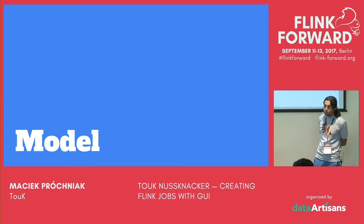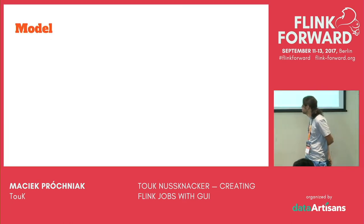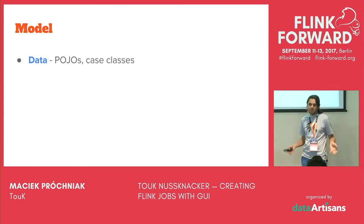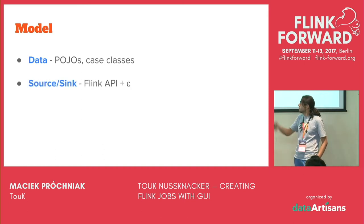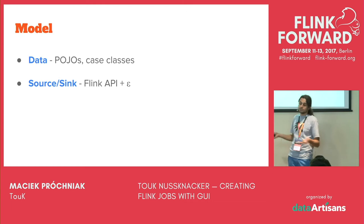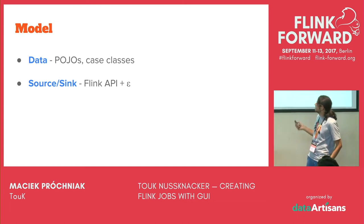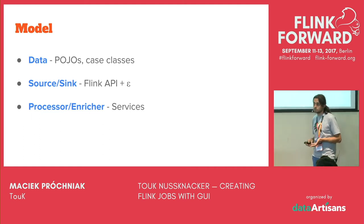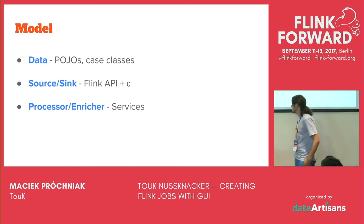What is in this magic jar with model? The first thing is the definition of data — your case classes, the stuff you read from Kafka, JMS, or whatever you want. Then there are definitions of sources and sinks — for example, what are your Kafka topics and what classes reside there. It's more or less the standard Flink API plus some additional goodies needed by NuSnacker. And the last thing is definitions of enrichment processes — for example, loading data from Redis cache or sending email from a Flink job.